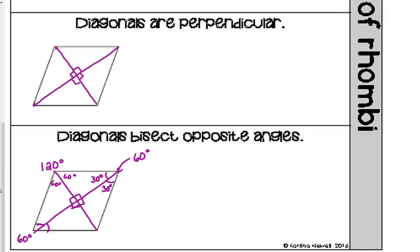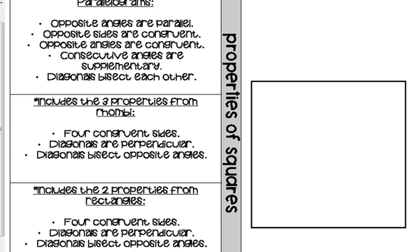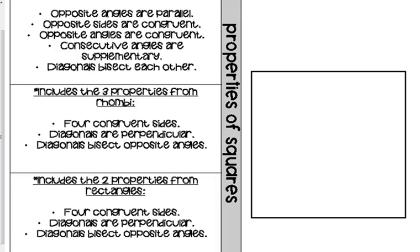The most specific quadrilateral we have is a square. A square puts all of these properties together. I just noticed there is a mistake on this handout — under the properties from rectangles, the first one listed should not be four congruent sides. Rectangles have two pairs of congruent sides, not four congruent sides.